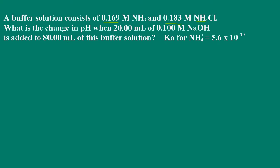What is the change in the pH when 20 milliliters of 0.1 molar sodium hydroxide is added to 80 milliliters of the buffer solution? Here we're given Ka for ammonium ion, and obviously we're going to use the Henderson-Hasselbalch equation here.